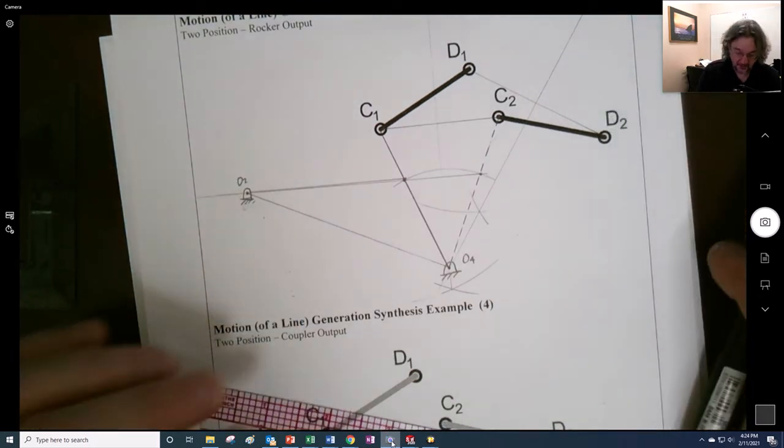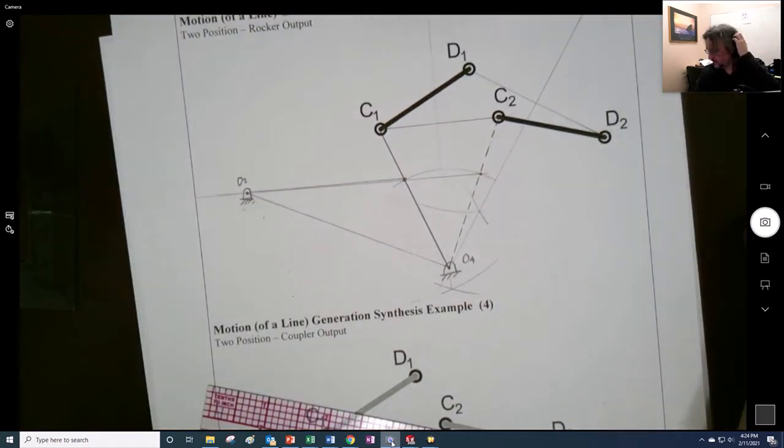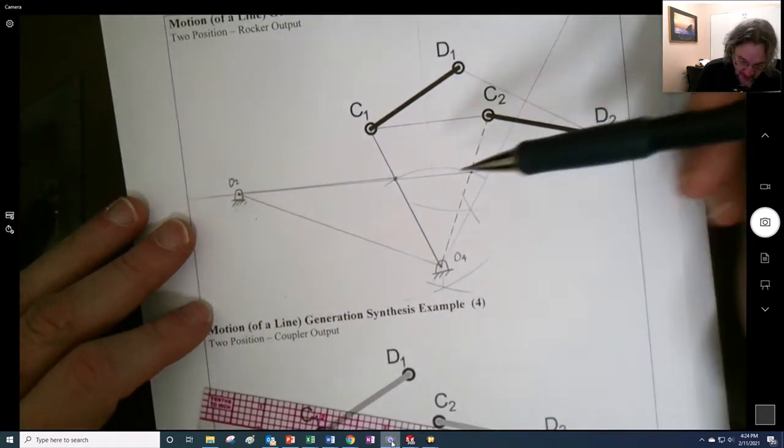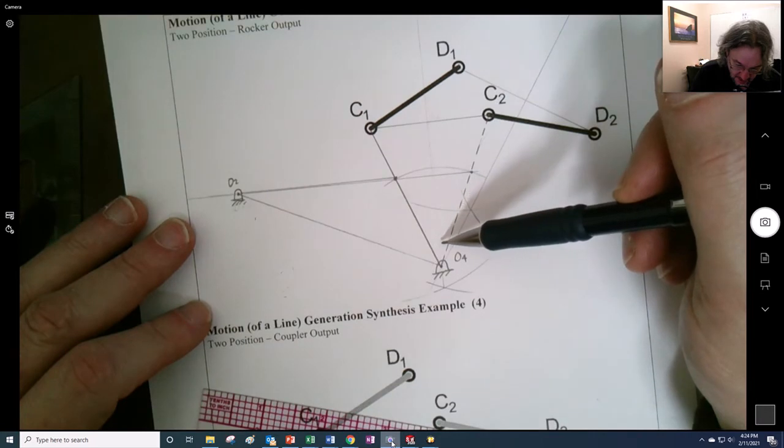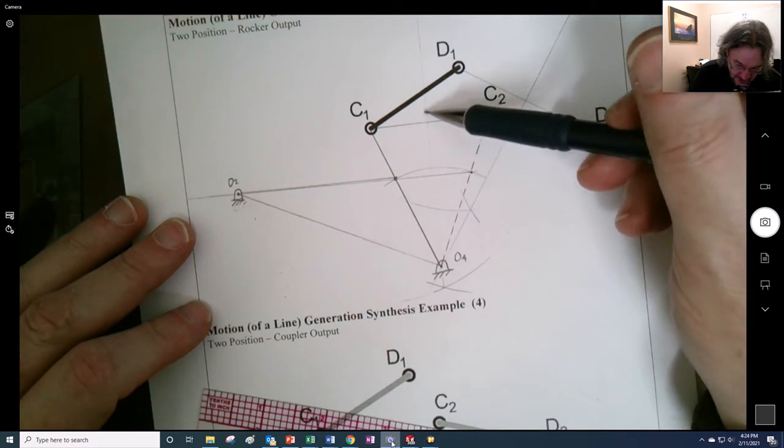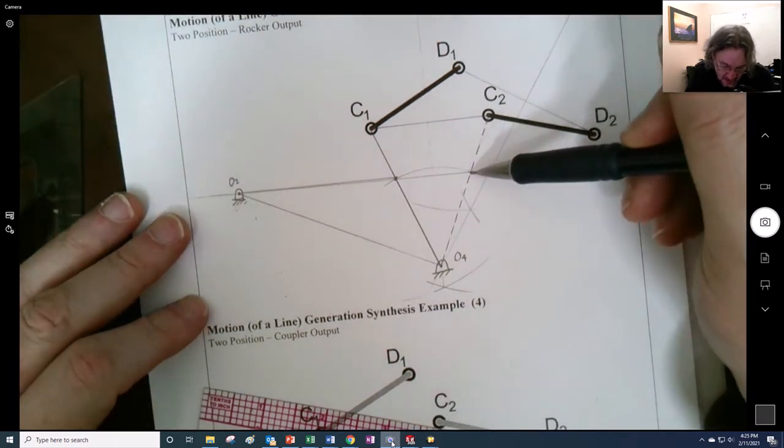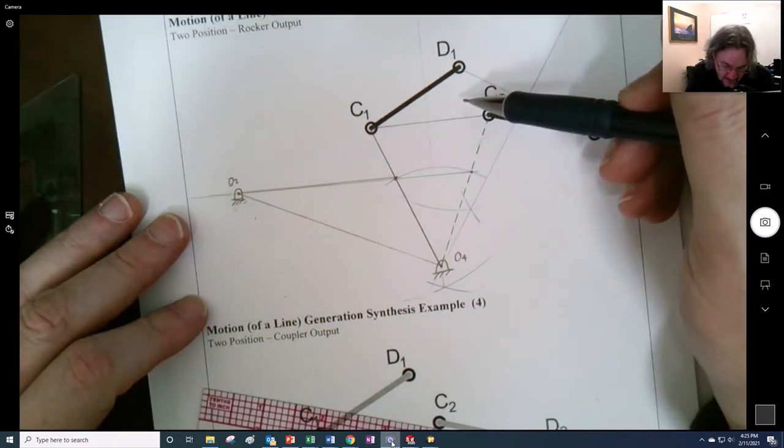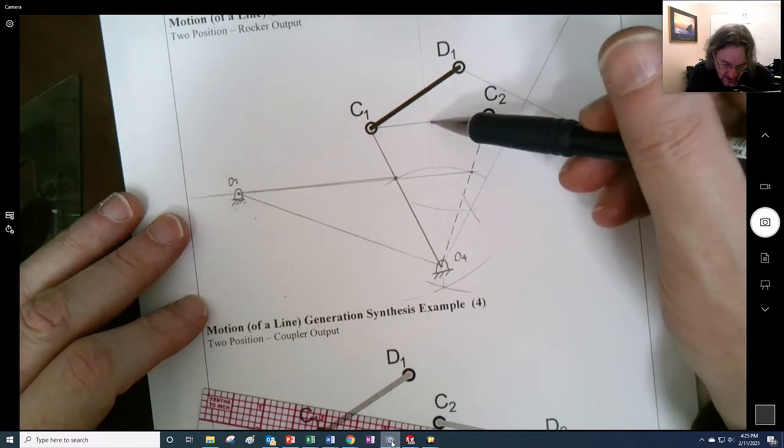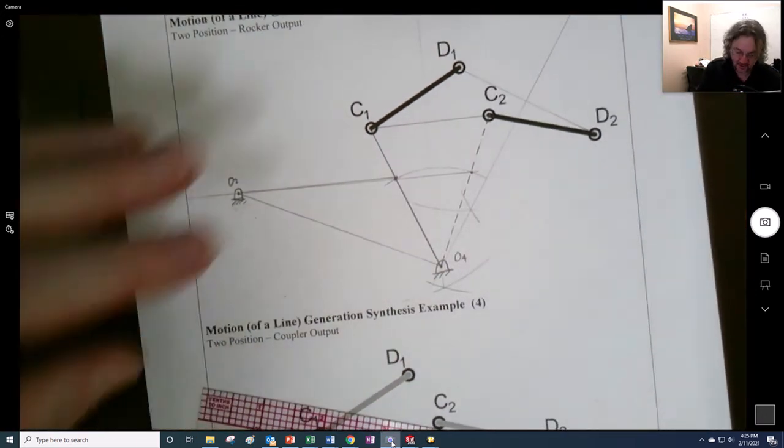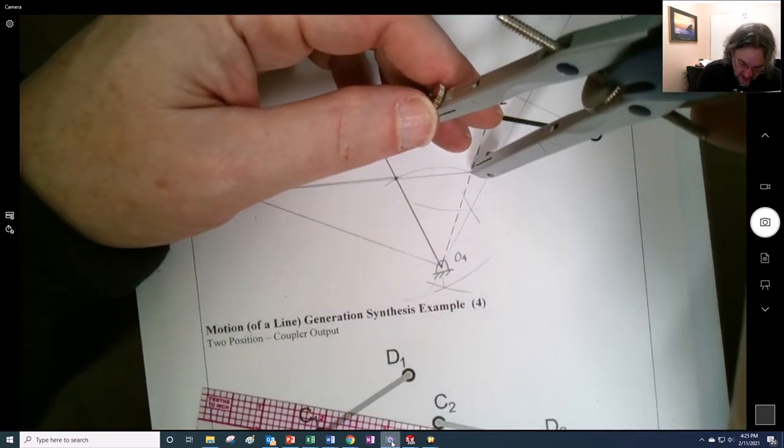And now, if you'll recall, I want to get the midpoint of, yeah, I want to be able to find the crank length. I need the midpoint. But actually, is this true? I want to bisect this. I think this line accidentally looks bisect.